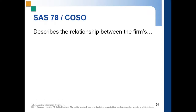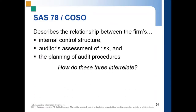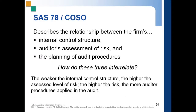We have here SAS 78, or the COSO — the Committee of Sponsoring Organizations of the Treadway Commission. The SAS 78 or COSO framework describes the relationship between the firm's internal control structure, the auditor's assessment of the risk, and the planning of audit procedures.